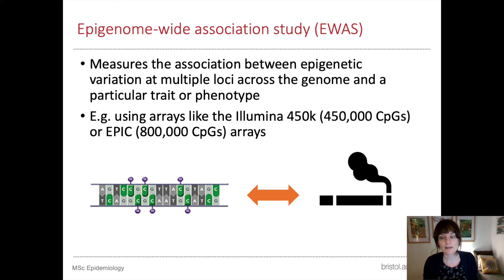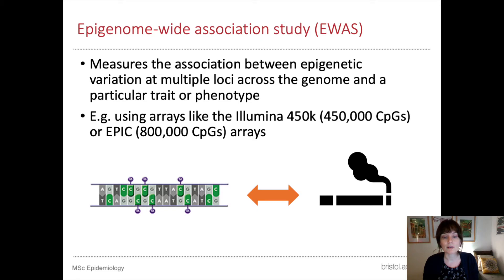This term, EWAS, is most commonly used to describe studies of array-based or increasingly genome-wide sequencing-based DNA methylation data sets. For example, an EWAS of smoking behaviour using the Illumina EPIC array would likely involve running around 800,000 regression analyses, although in principle any statistical test could be used, and then assessing smoking in relation to DNA methylation at different specific CPG sites measured by the array.